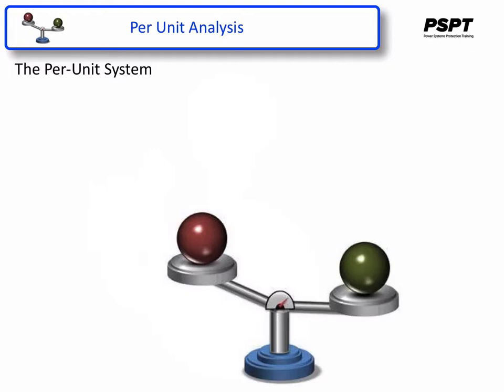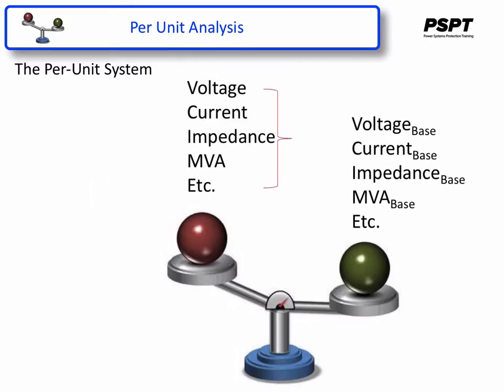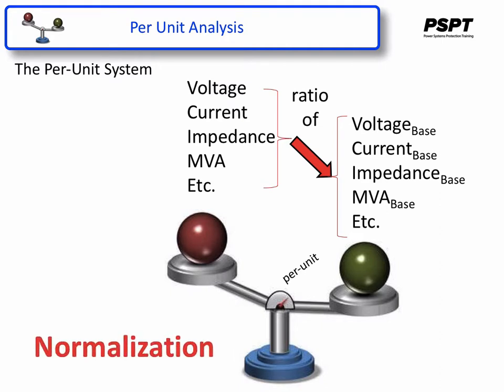The per unit system is basically taking voltages, currents, impedances, and MVA of a system and comparing them to a pre-selected base voltage, base current, base impedance, and MVA base, such that voltage over voltage base and current over current base will provide you with a ratio, and that ratio is called a per unit value. The process for getting there is called normalization.